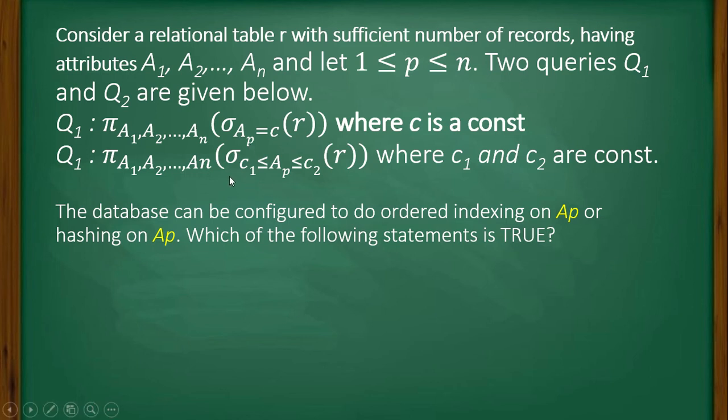Here Ap = c, and here Ap belongs to the range c1 to c2. That means in case of the first query, only one value is going to be selected. Here, multiple values may be selected because Ap belongs to a range.